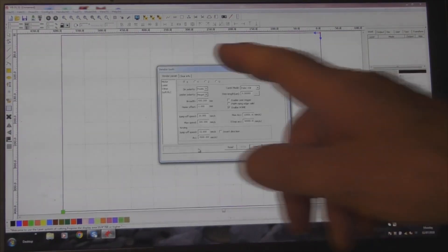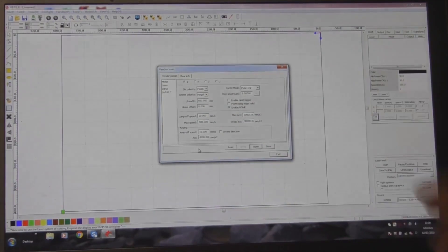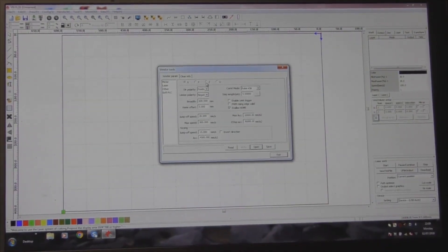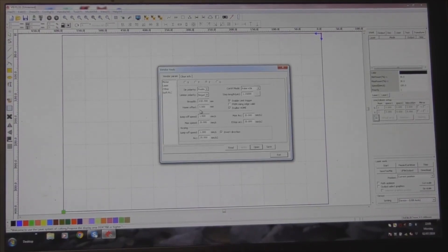And that gets me into this window here where I get the opportunity to mess around with X, Y, and Z axis. We're going to mess around with the Z axis, and what we've got here is something called the home offset.